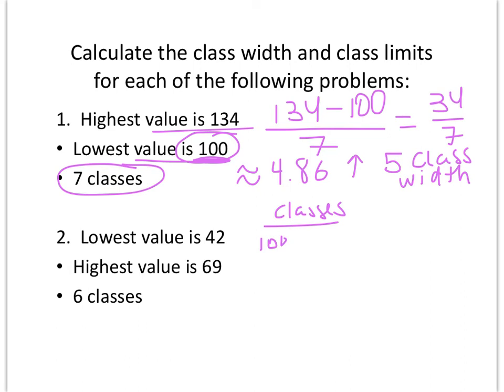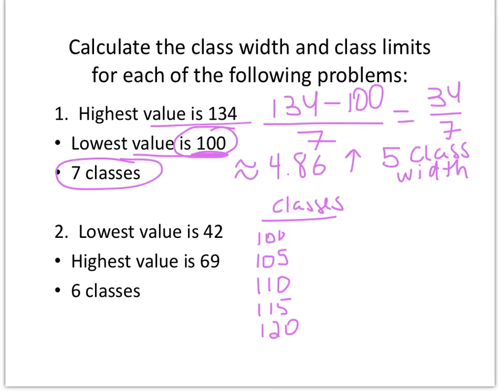I'm going to want 5 different groups, so I just keep adding 5. 105, 110, 115, 120. 125 and 130. So we have, let's just double check, we need 7 classes. 1, 2, 3, 4, 5, 6, 7 classes. Good.